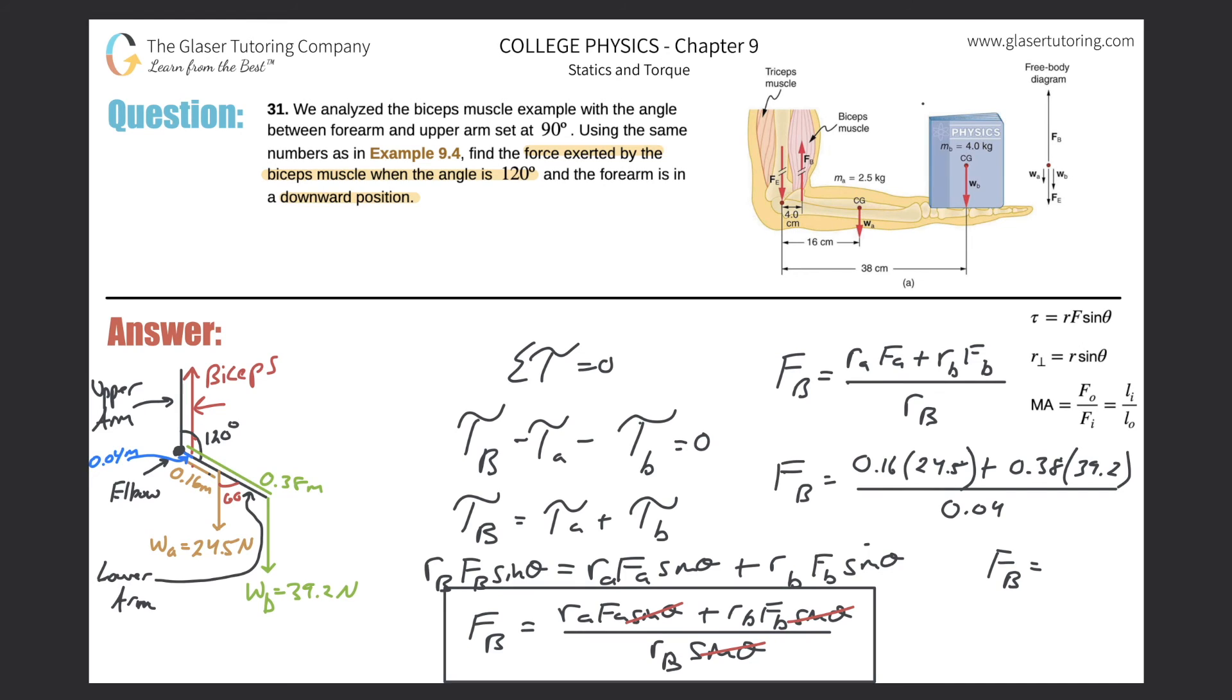And now when I just throw this all into the calculator, let's see what we come up with. Alright, so 0.16 times 24.5. And add that 0.38 times 39.2. Divide that whole thing by 0.04. And we get about 470, right? So 470 newtons. And that's the force that the bicep is exerting.